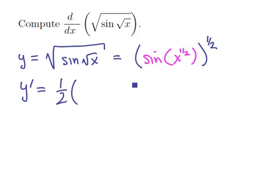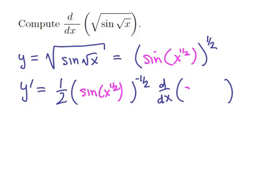The derivative of blank to the 1 half is 1 half blank to the minus 1 half times the derivative of the blank. And the blank in this case is the sine of x to the 1 half. So we'll put that here and we'll put that here.